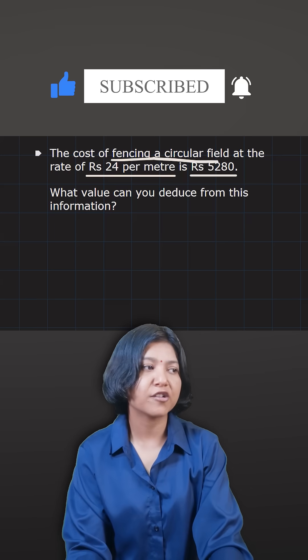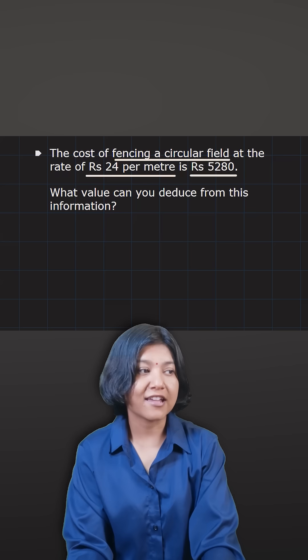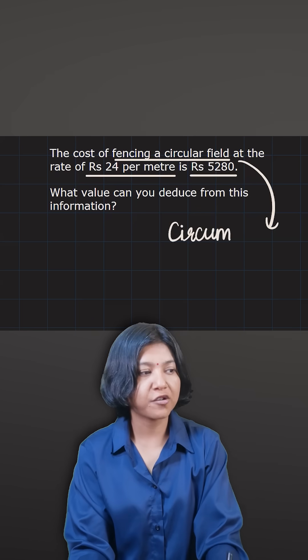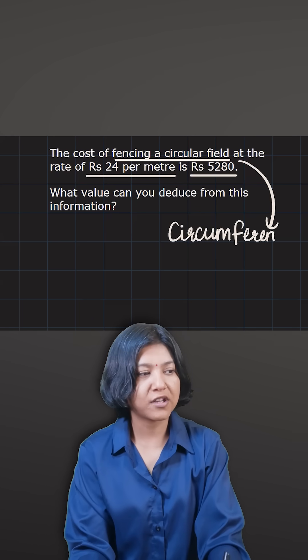Here the cost given to you is for fencing a circular field. As in, what you'll be getting is the boundary length, or in fact what we are getting will be the circumference.